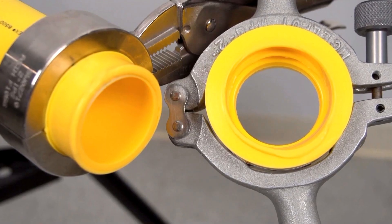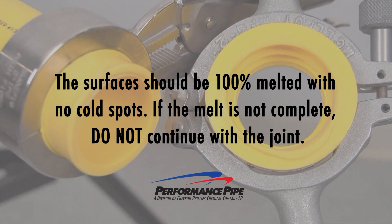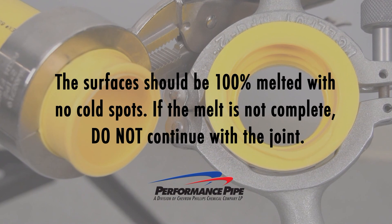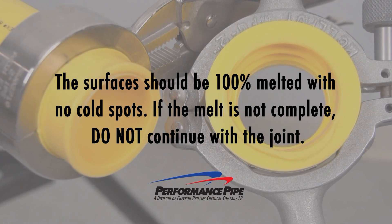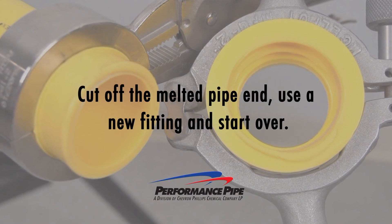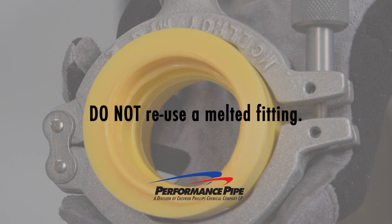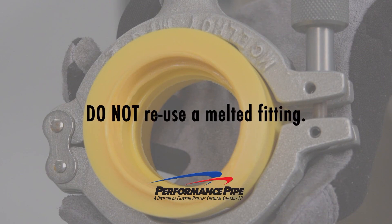Quickly check the melt pattern on the pipe end and the fitting socket. The surfaces should be 100% melted with no cold spots. If the melt is not complete, do not continue with the joint. Cut off the melted pipe end, use a new fitting, and start over from step one. Do not reuse a melted fitting. If the melt is correct, continue the joining procedure.